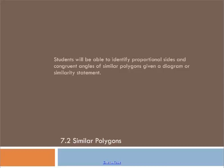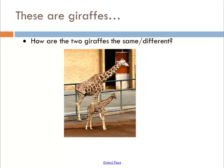We're going to continue chapter 7 by talking about similar polygons. We talked about proportions in the last section and we're going to use that now to start looking at shapes. So how are these two giraffes the same and different? When you look at the giraffes, the things that are the same is they have the same structure, same forelegs, same long neck, they have the same spots for the most part. They're the exact same shape but they're a different size.